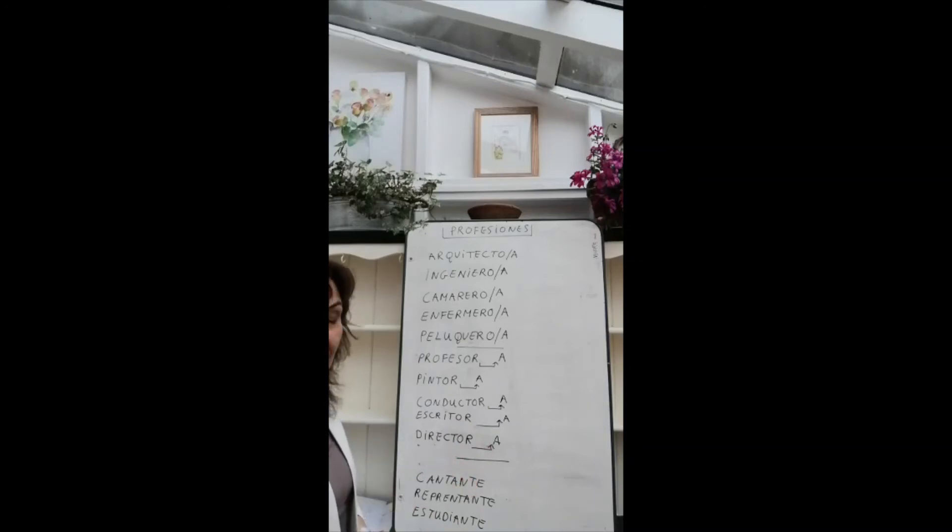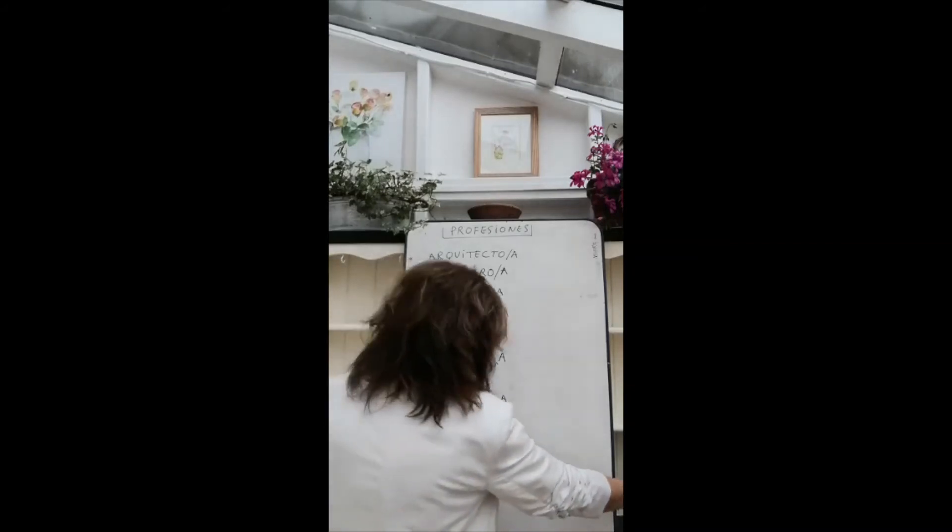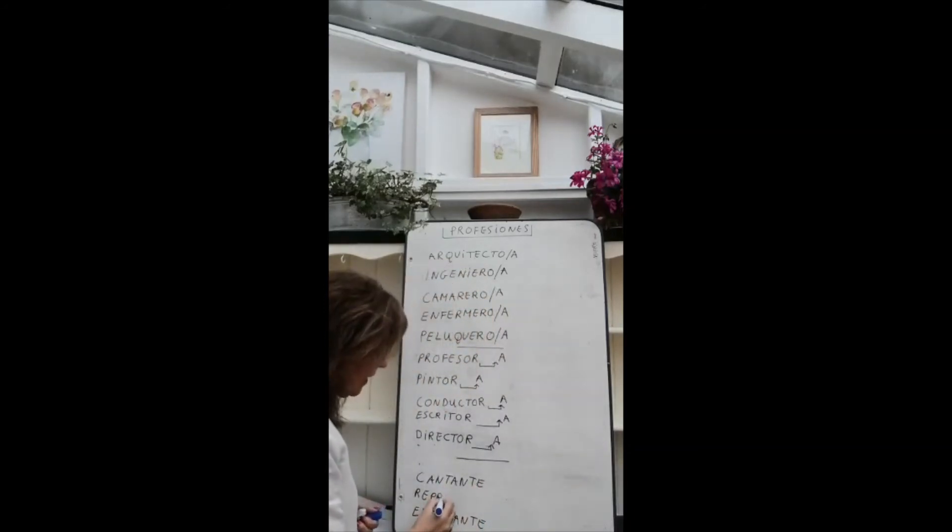If you are looking in the dictionary words, professions, and they end in an E, they are the same for male or female. So the first one, Cantante, is singer. So Juan es cantante. Maria es cantante. It will be the same. Representante. Representante. Estudiante is the same as well.